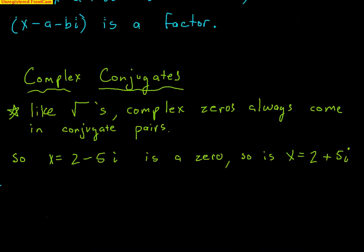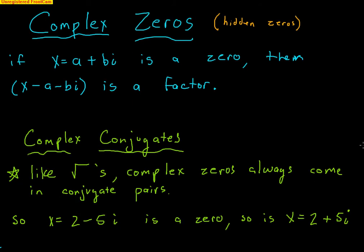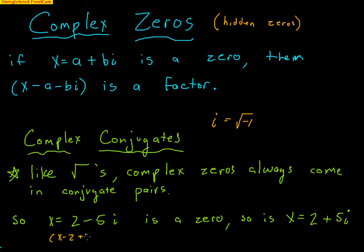Now let's talk about zeros — specifically complex zeros. If x = a + bi is a zero, that is a complex zero, and it would have a complex factor (x − (a + bi)). Just like before, if we know a zero, we know its factor. We're now adding the fact that zeros can be complex, which means they have complex factors.